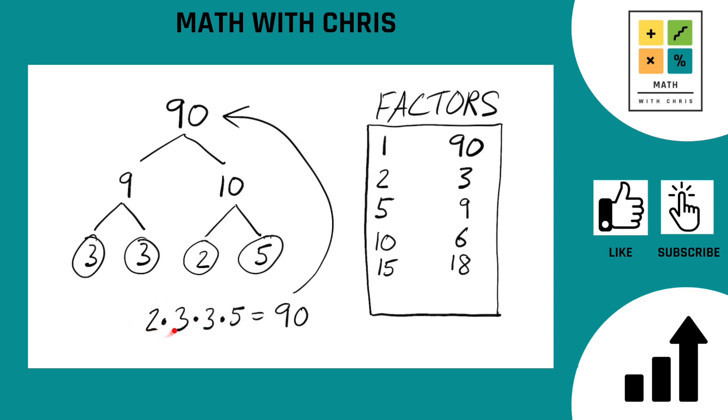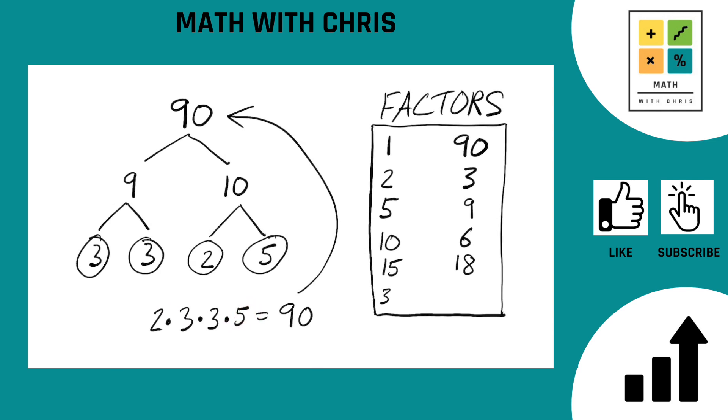What about 2 times 3 times 5? 2 times 3 times 5, that's in fact 30. Don't have 30 yet. Let's add 30 to the mix.